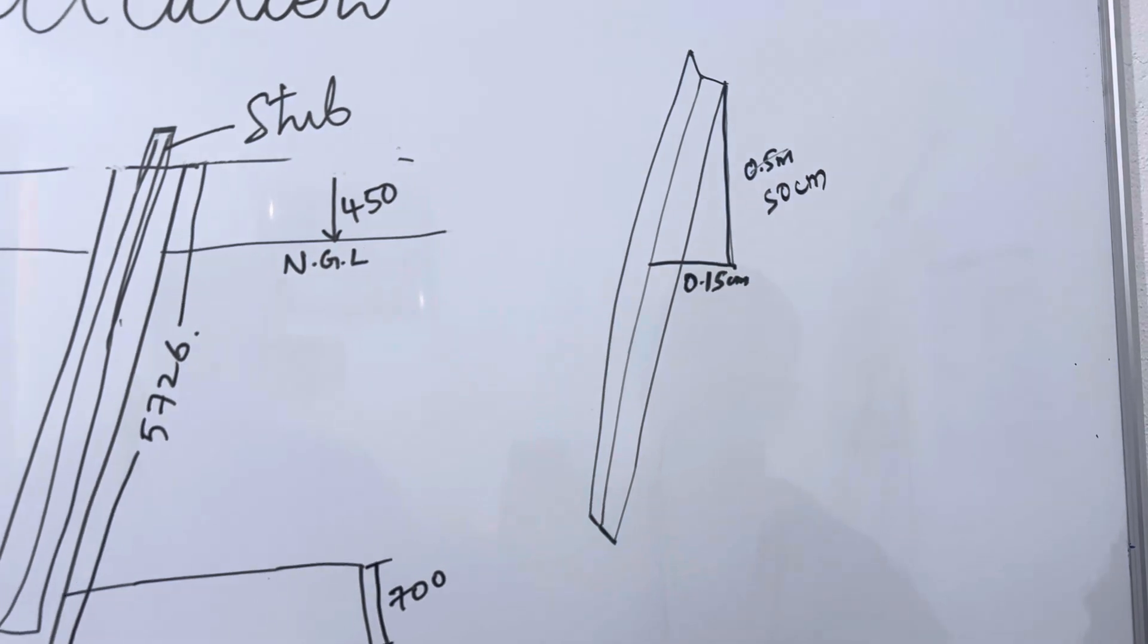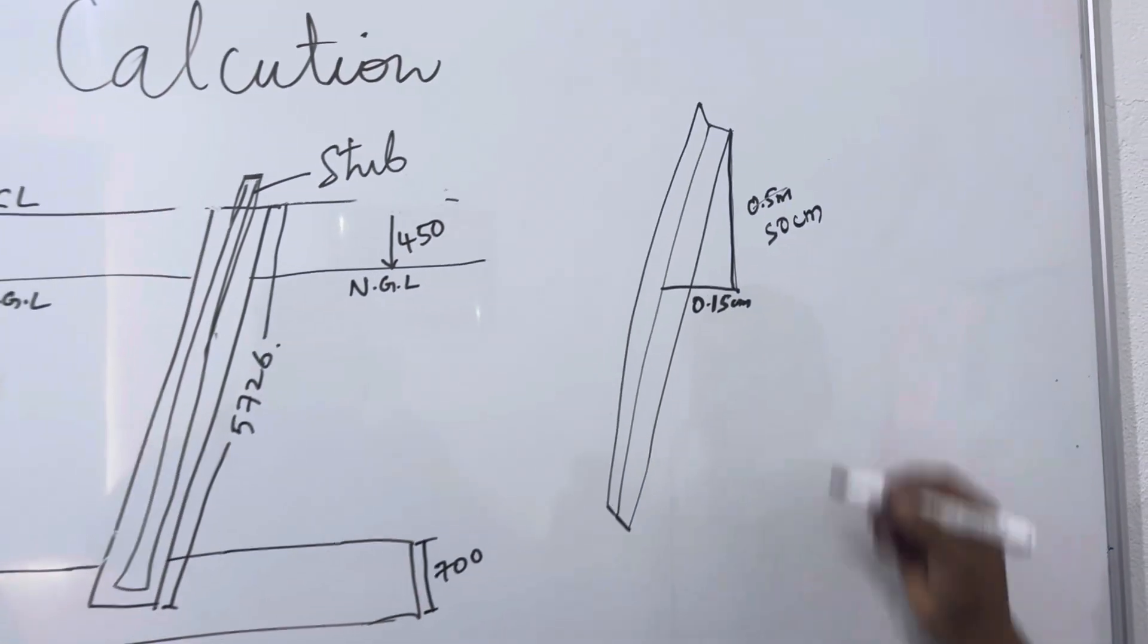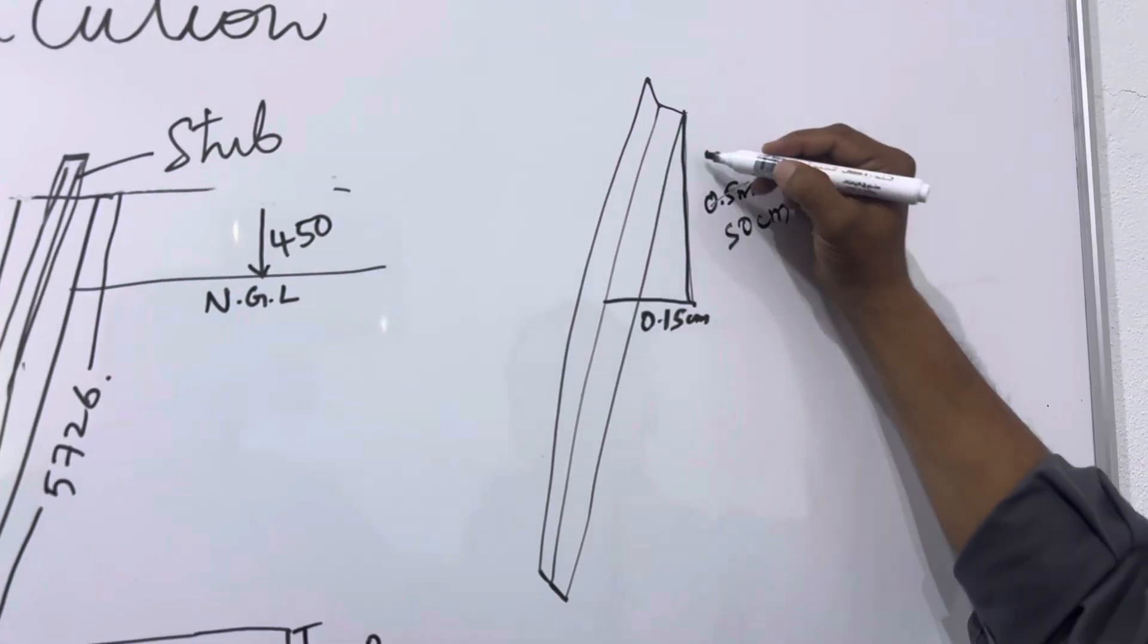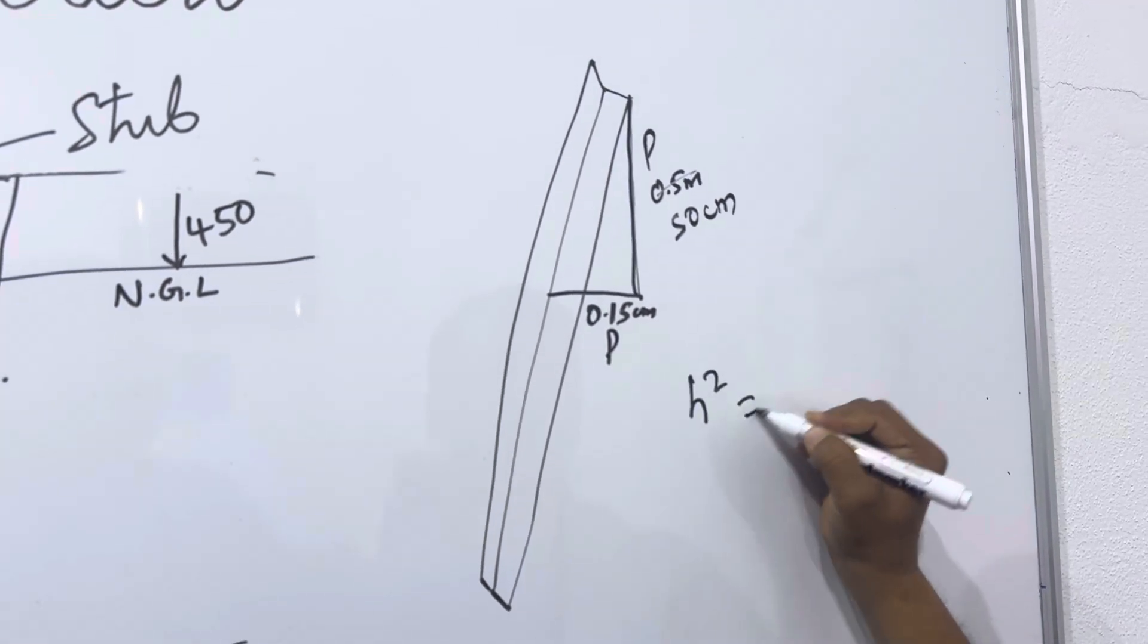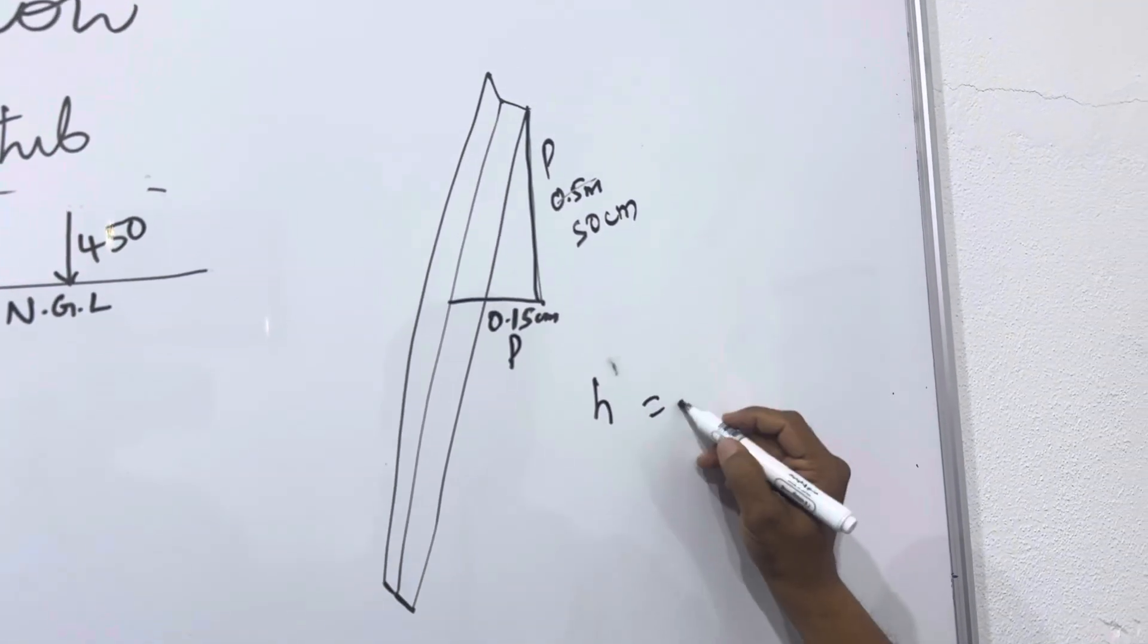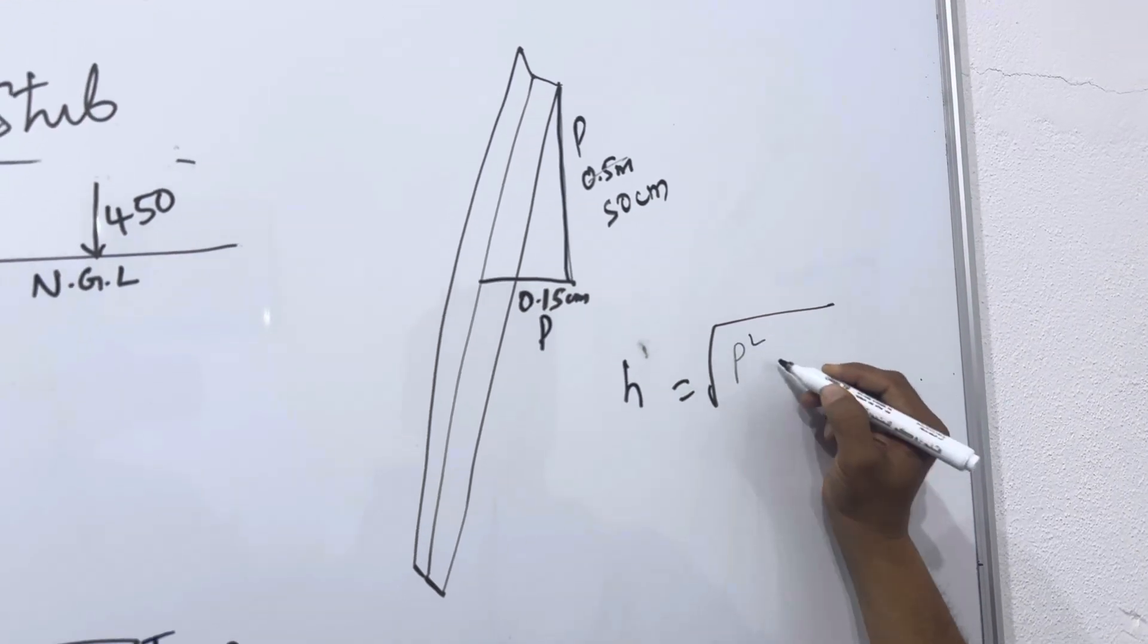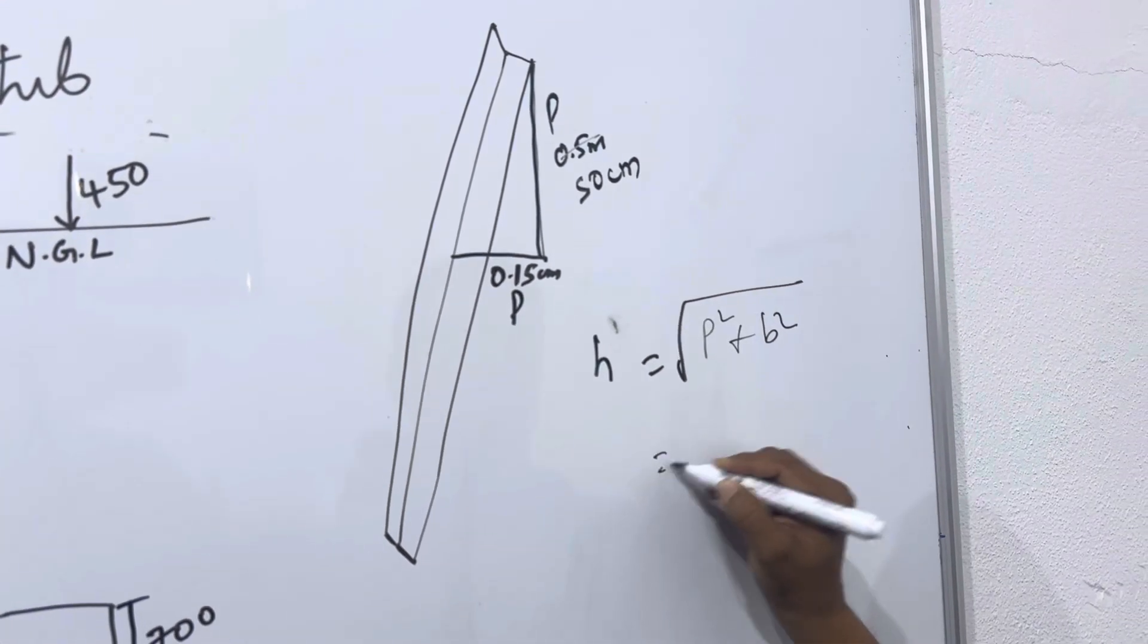Half meter, half meter, half meter. If we calculate this 50, this is perpendicular and this is base, h square is equal to, h is equal to root under p square plus b square is equal to.